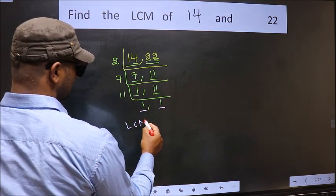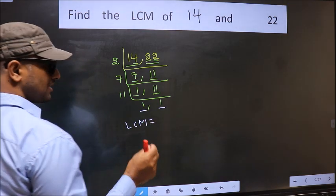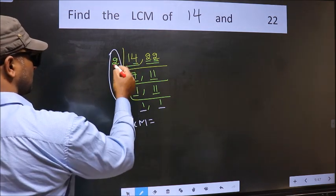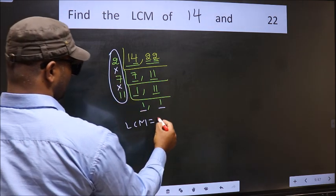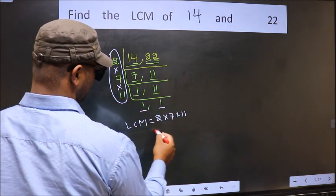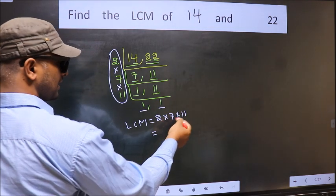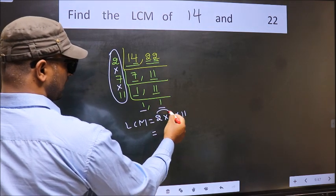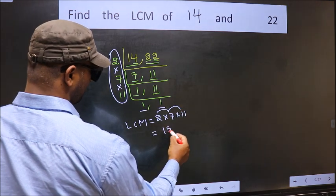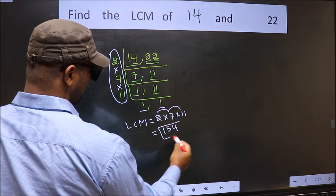So, our LCM is the product of these numbers. That is 2 into 7 into 11. So, let us multiply these numbers. 2 into 7, 14 into 11, 154 is our LCM.